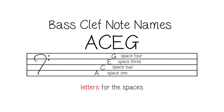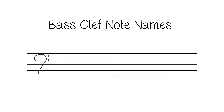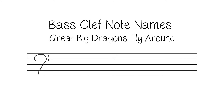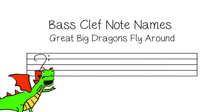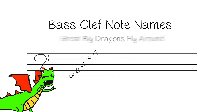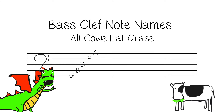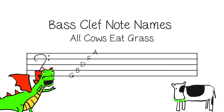Those are the letters for the spaces. Let's review. "Great big dragons fly around" gives us G, B, D, F, and A. And "All cows eat grass" gives us A, C, E, G.